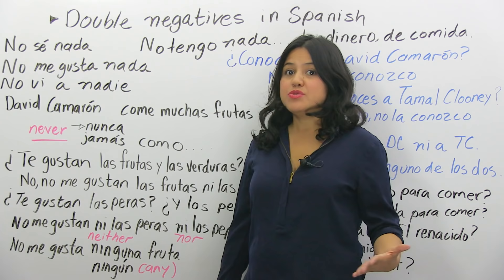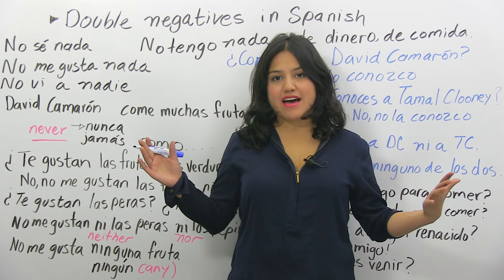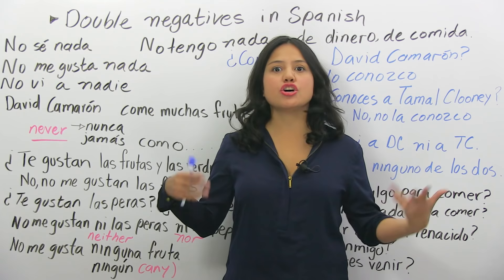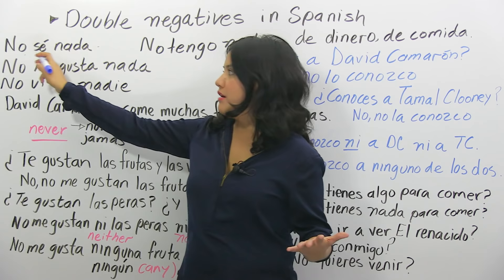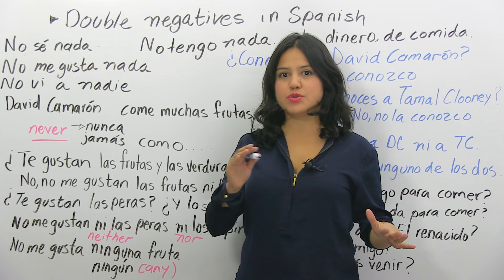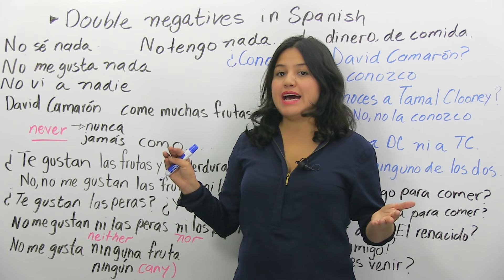For instance, when you say 'I do not know anything,' you would say in Spanish: no sé nada. It's like saying 'nothing,' but it's appropriate — it's correct. No sé nada. We're saying 'no' and 'nada' — no and nothing. That's why they call it double negation. No me gusta nada — I do not like anything. It's as if you were saying 'I do not like nothing.' No me gusta nada.